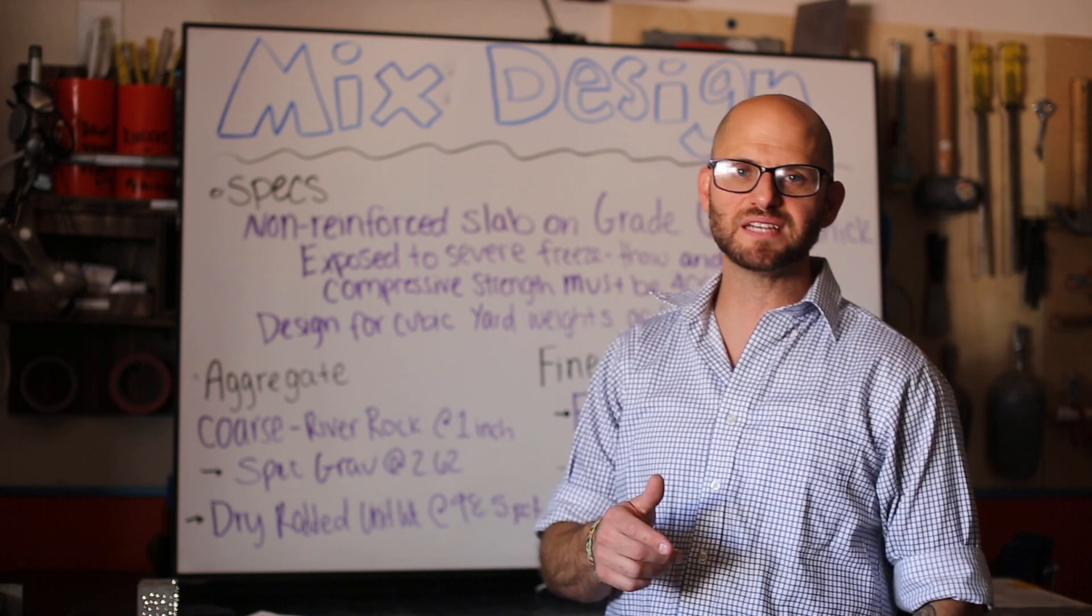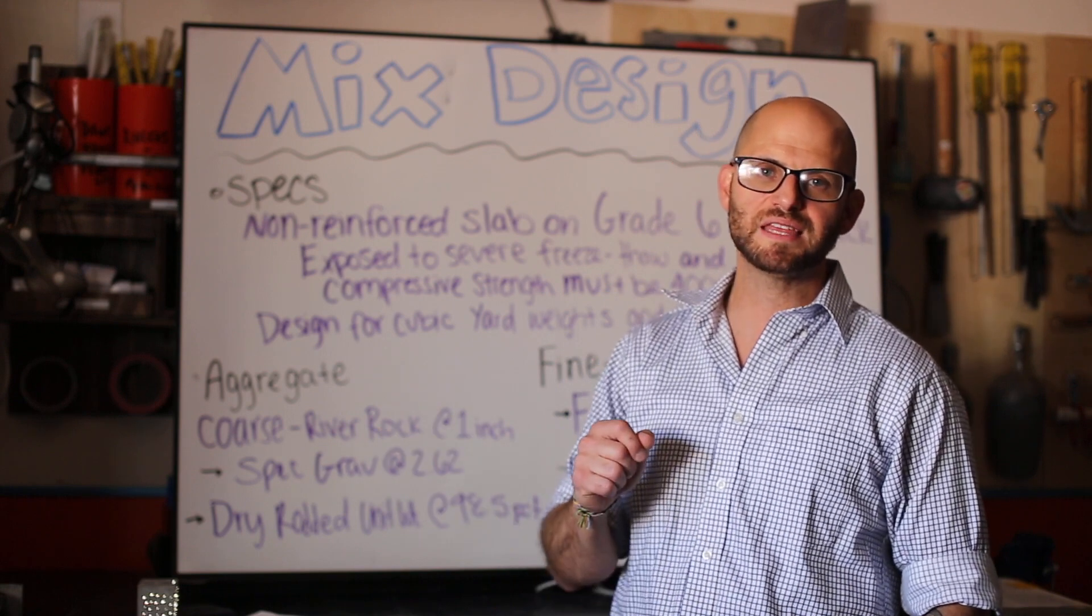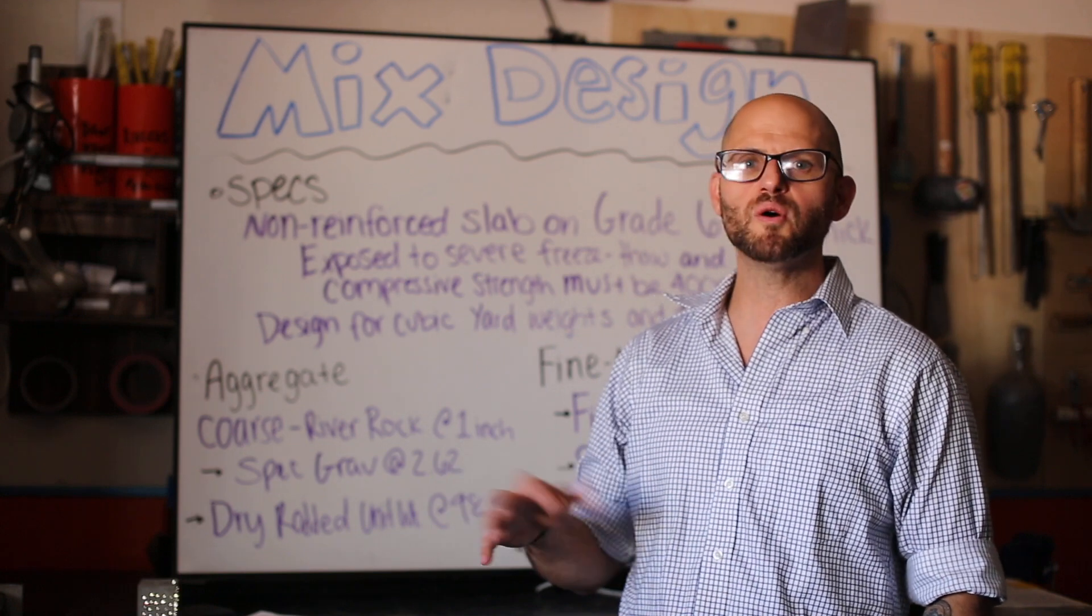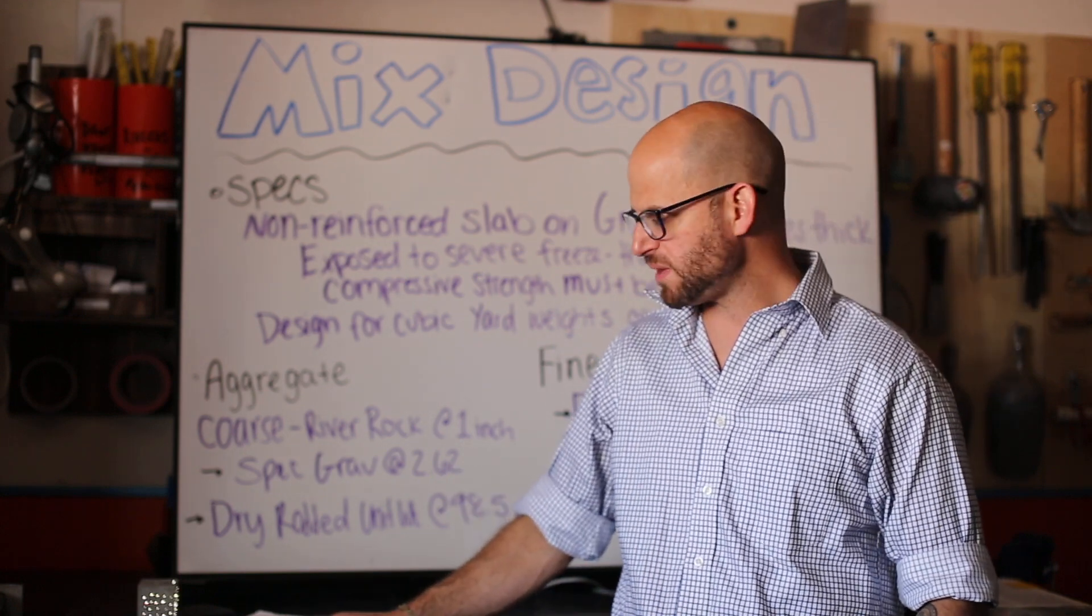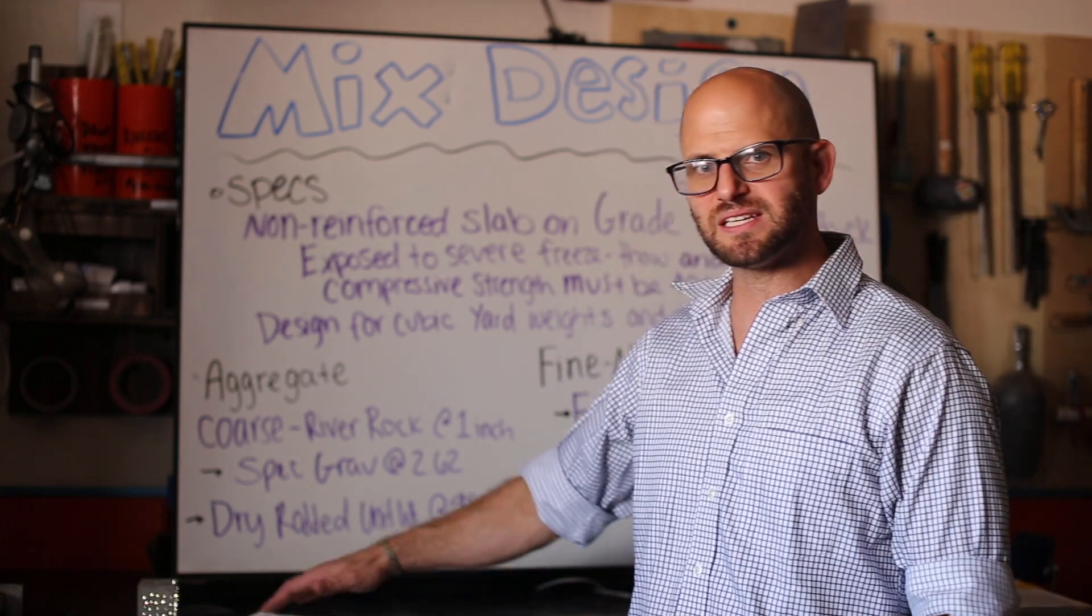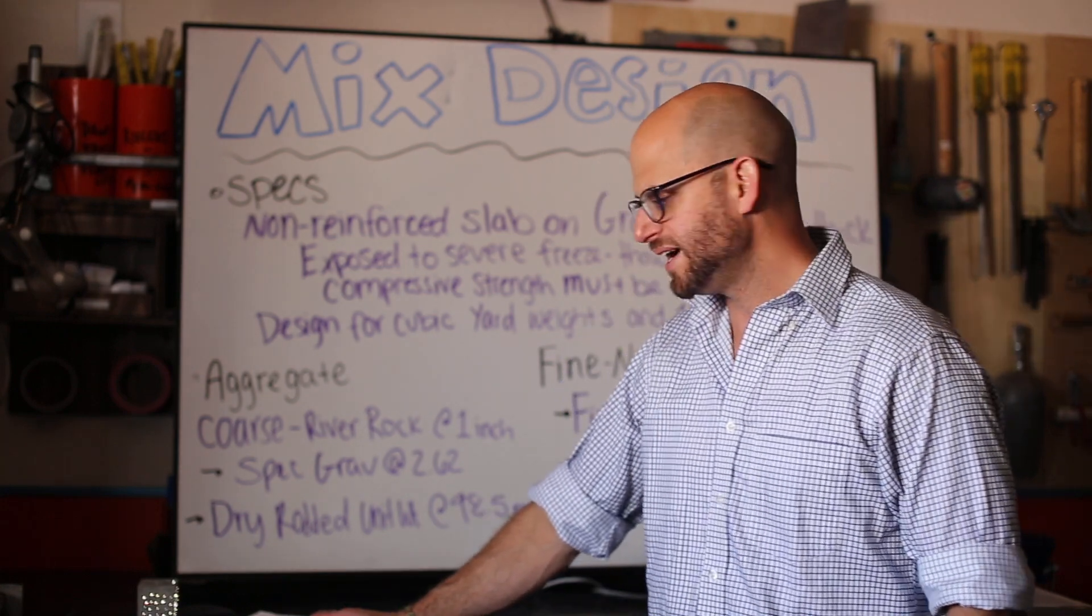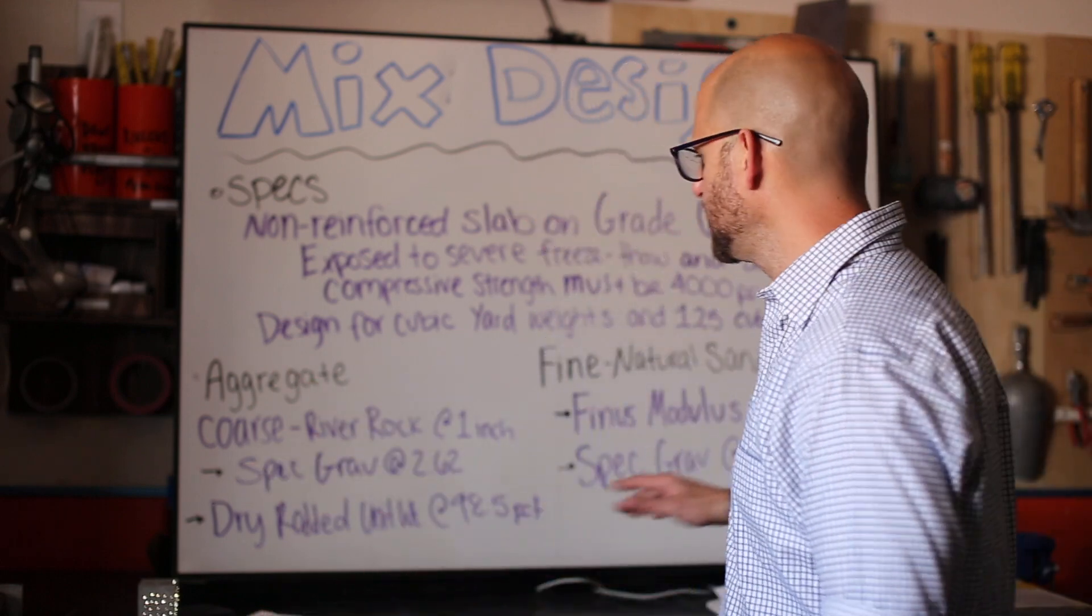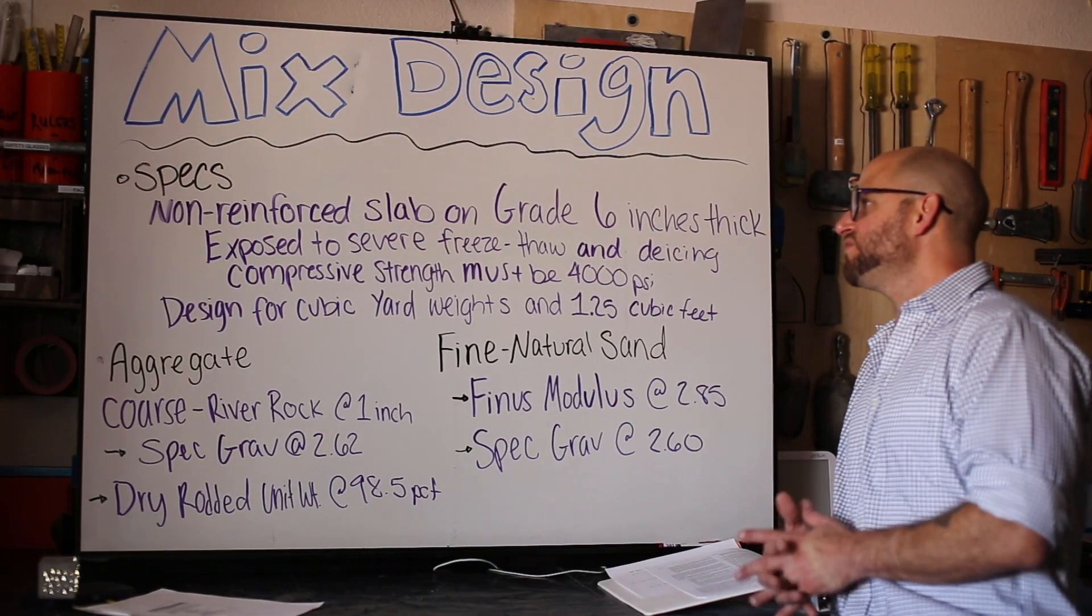We've actually gone through ACI 211, the absolute volume method. There's different books out there that go over concrete design in a couple different methods, but we like ACI 211. It's the easiest method to use, it's the most direct approach.